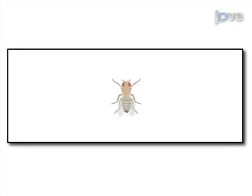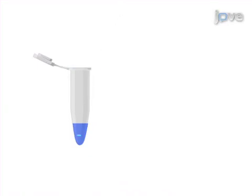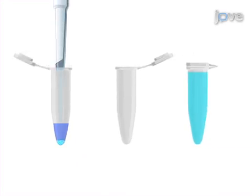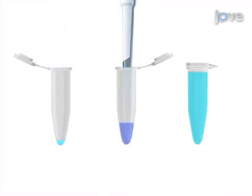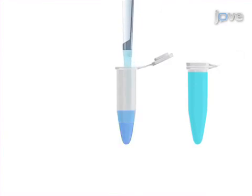First, dissect whole tissue like adult Drosophila brain. Incubate the intact tissue in insect culture medium to allow for the diffusion of nitric oxide. Now separate the culture medium and tissue sample. Then mix the conditioned culture medium with modified Griess reagent to detect the nitrite levels, an indicator of nitric oxide production.